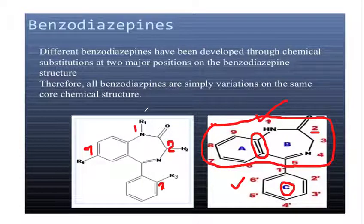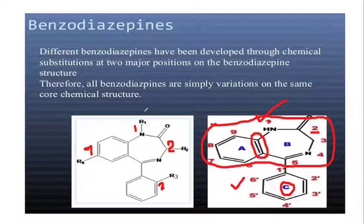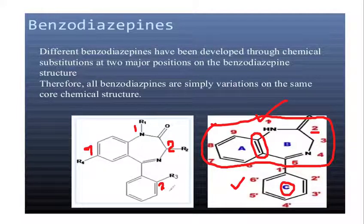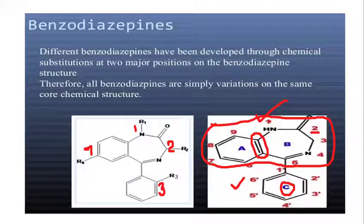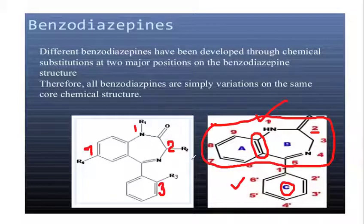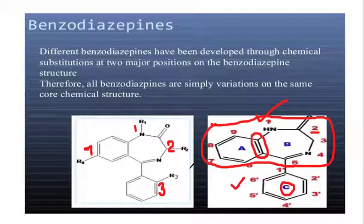You will know that benzodiazepine is the class name and there are different drugs within it. The difference is only in those 4 positions, where we attach different groups, changing the molecular structure. If we change the molecular structure, our therapeutic activity is affected — and basically, this is the SAR.